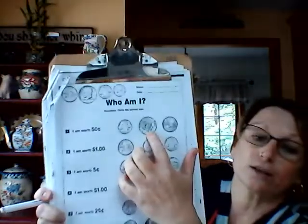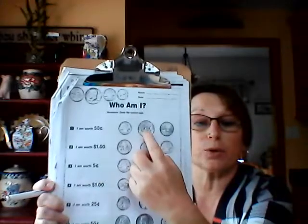Who Am I? Circle the correct coin. Reminder: please put your name and today's date on your paper so that you get credit. Number one — I am worth 50 cents. Am I a quarter, a half dollar, or a Sacagawea coin? Which one is worth 50 cents? Can you find the half dollar? It is in the middle — so it would be this one. Let's circle that. That is worth 50 cents.